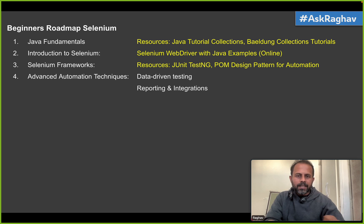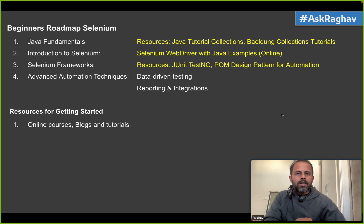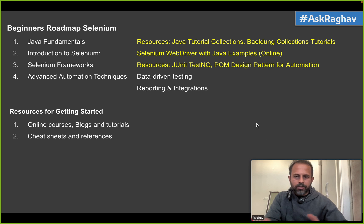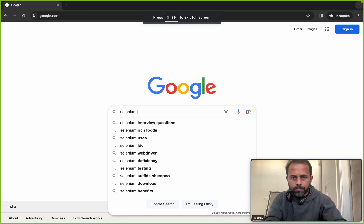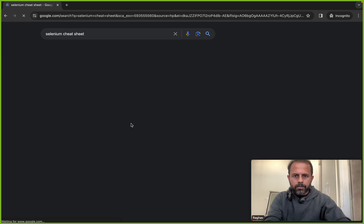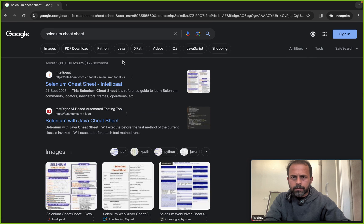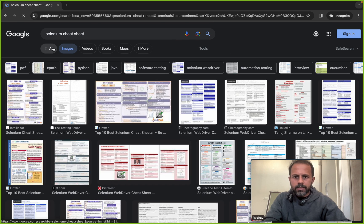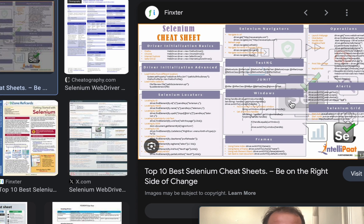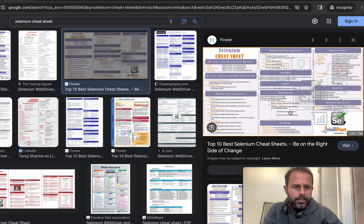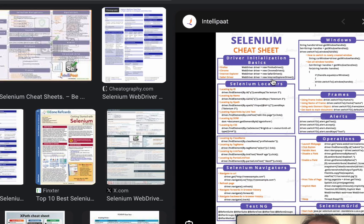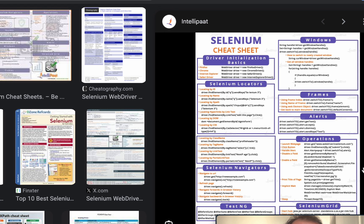If you follow these steps, you will be at a stage where you can design and develop Selenium frameworks. To get started today, go online and search for courses, tutorials, blogs, articles, and resources — most of these are freely available. You can also use cheat sheets and references. For example, if I search for 'Selenium cheat sheet,' you can see a lot of cheat sheets come up, covering Selenium locators, TestNG, JUnit, driver initialization, and more. These work as a refresher and are very handy when working in your projects.